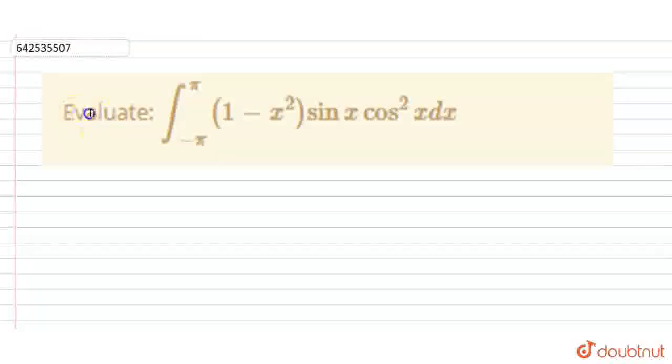Hello students, the question is: evaluate integral minus pi to pi into (1 minus x square) into sin x cos square x dx.